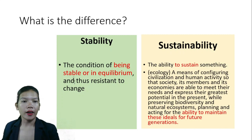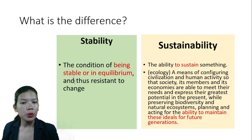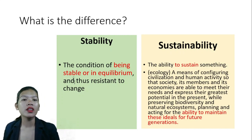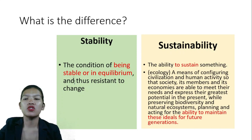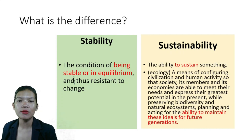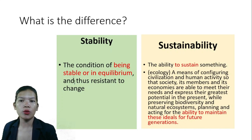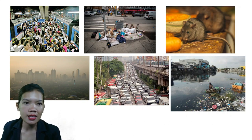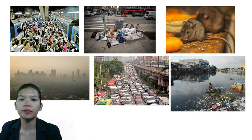Sustainability means meeting needs and expressing greatest potential in the present while preserving biodiversity and natural ecosystems, and planning and acting for the ability to maintain these ideals for future generations. An example of environmental sustainability is the rate of renewable resource harvest, pollution creation, and non-renewable resource depletion that can be continued indefinitely. If they cannot be continued indefinitely, then they are not sustainable.